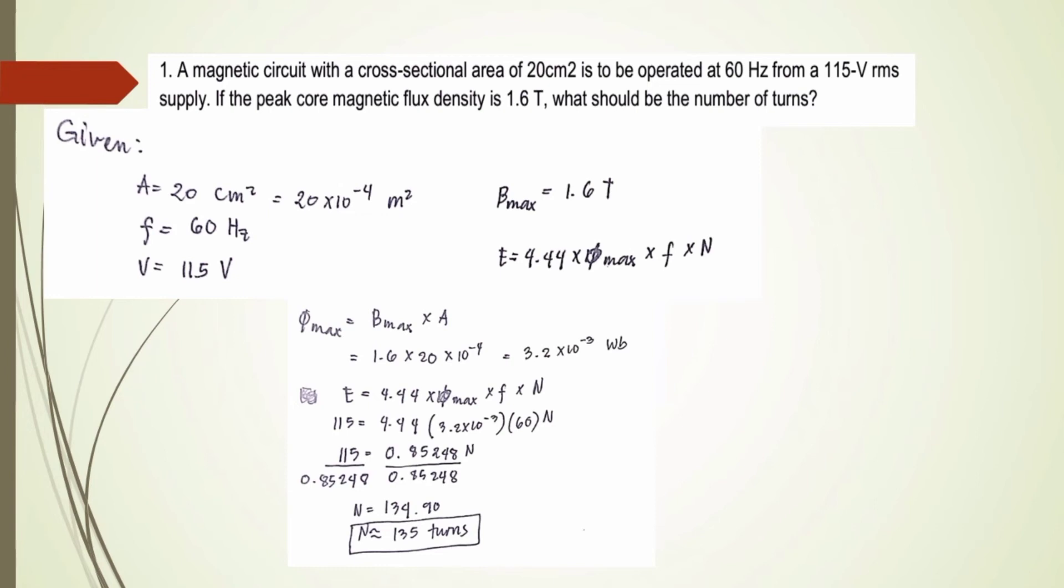hanapin natin yung maximum flux. So the formula to find the maximum flux is just the cross-sectional area times the flux density.